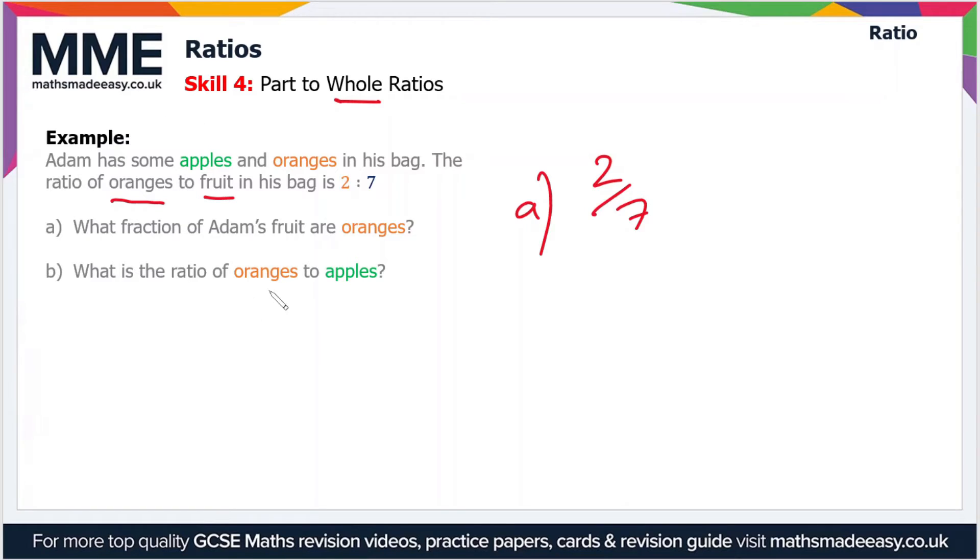So for part b, what is the ratio of oranges to apples? Well, we know how many oranges he has. Of the seven parts in total, two of them are oranges, so that means the number of apples is 7 minus 2, which is 5.